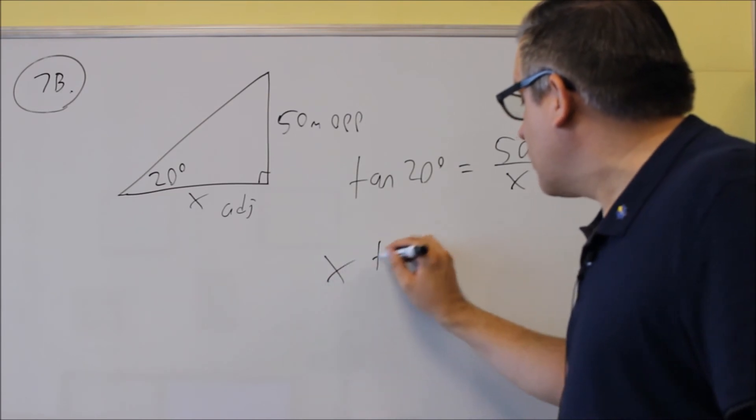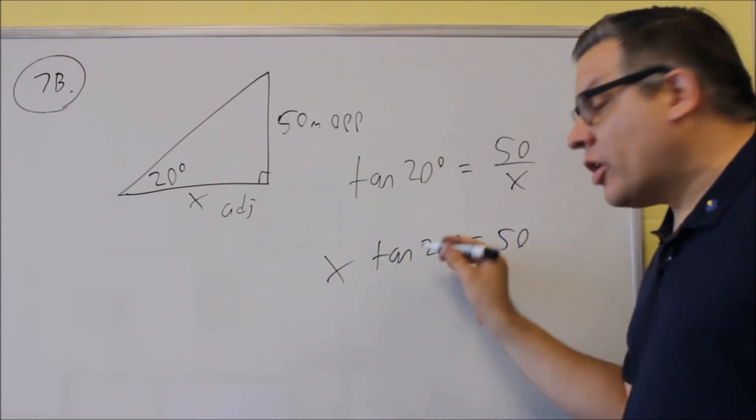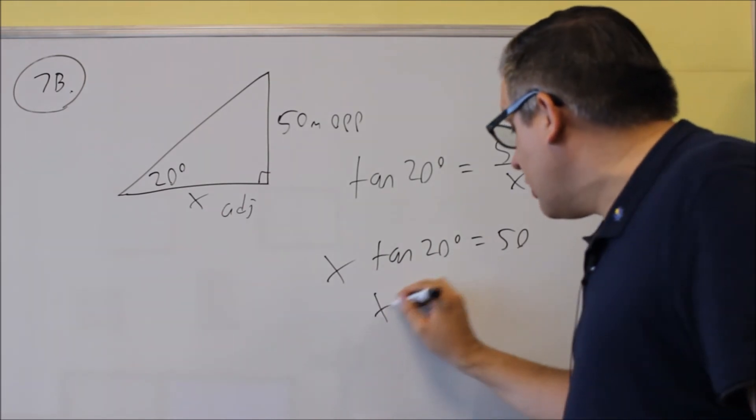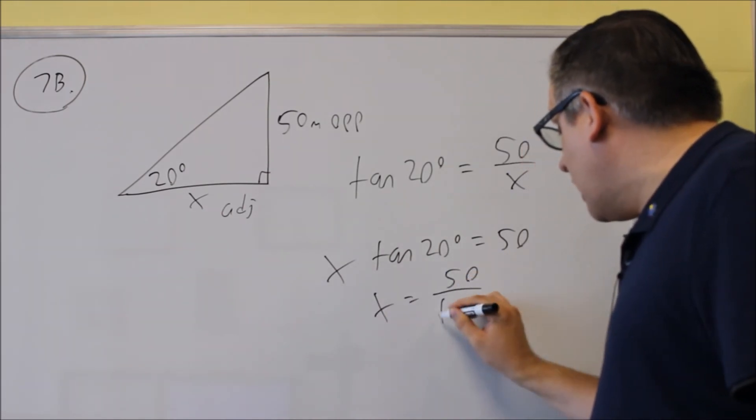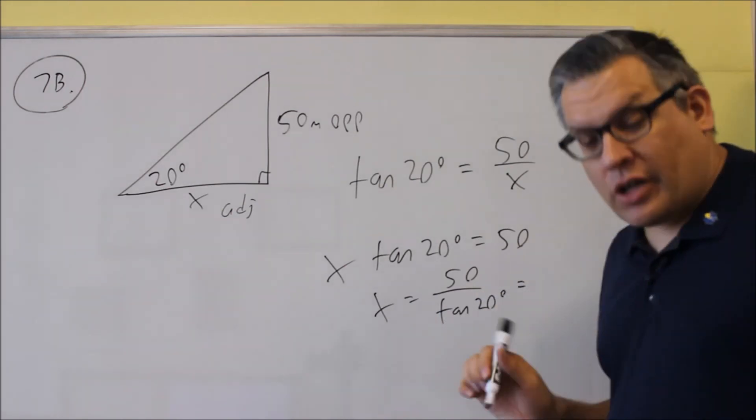Cross multiply. x tangent 20 degrees is going to equal 50. We're going to divide both sides by tangent 20. We get 50 divided by tangent 20, and we put that in the calculator.